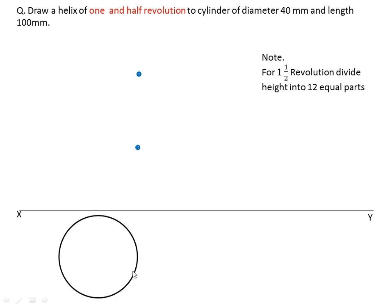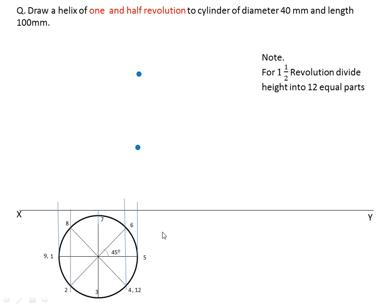Draw the top view — the cylinder looks like a circle in top view. Divide the circle into 8 equal parts and take the projections of the generators. Give the names 1, 2, 3, 4, 5, 6, 7, 8, 9, 10, 11, 12. Give the dimension to the circle.